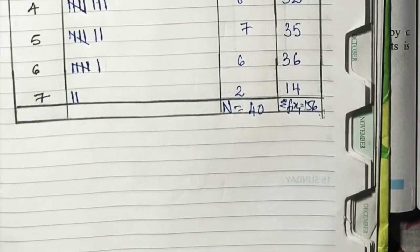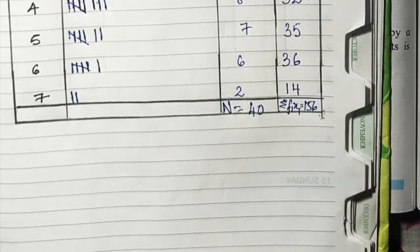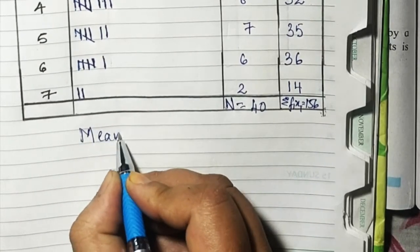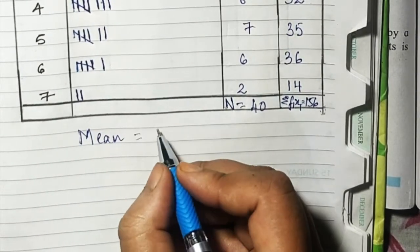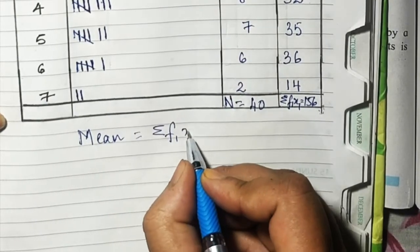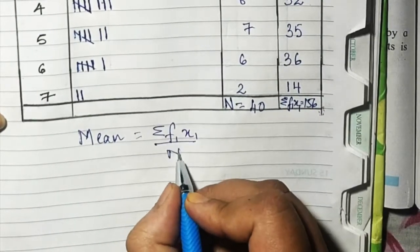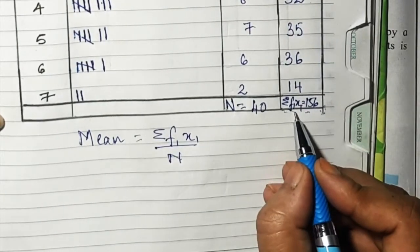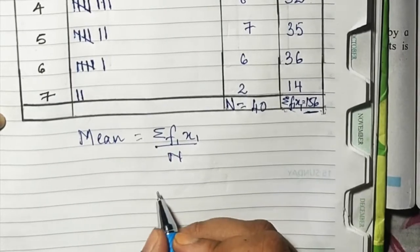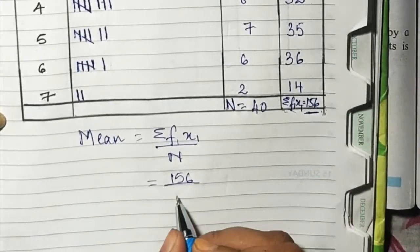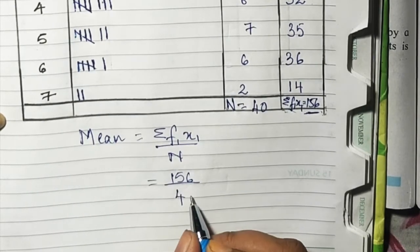Now they have told us to find the mean. To find the mean, first write the formula: mean equals summation of fi into xi upon n. The total of fi into xi is 156, so 156 upon n. N is 40, so 156 upon 40.